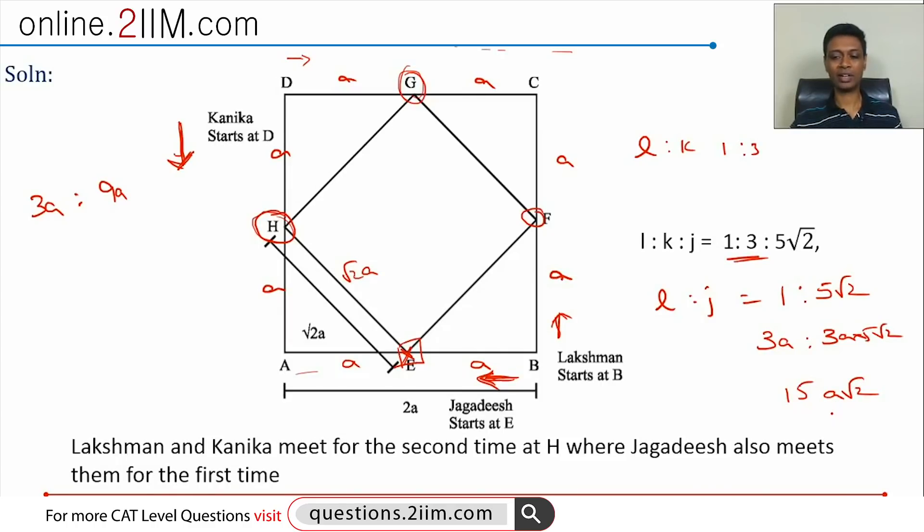It's nothing but seven and a half times 2A√2, or seven and a half times, 7.5 into √2 times the side of the larger square. Once we find how much Jagdish has traveled in terms of A, let's root this question. We know how much Lakshman traveled, that is 3A. He moves in this direction, 3A. In the same time, Kanika travels 9A to reach H. So Lakshman has traveled 3A, how much will Jagdish travel? 3A into 5√2, the ratio of their speed is 1 is to 5√2. This is 3A into 5√2, which is 15A√2. So finding one of the answer choices is very straightforward.